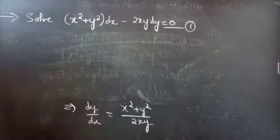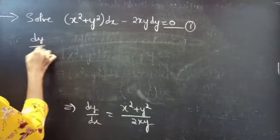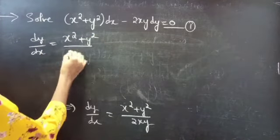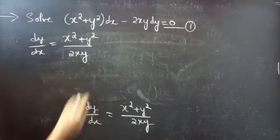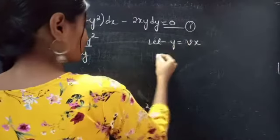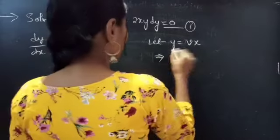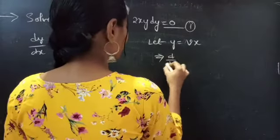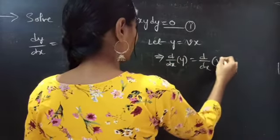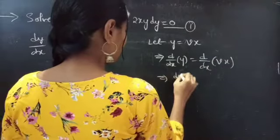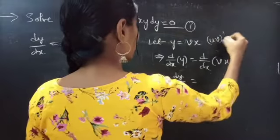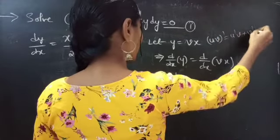We have dy by dx equals to x squared plus y squared by 2xy. Now let y equals to vx. Differentiate both sides with respect to x. Then, dy by dx of y equals to d by dx of vx.